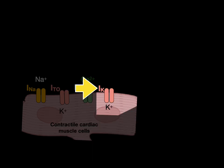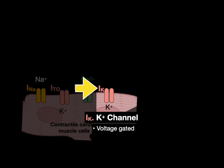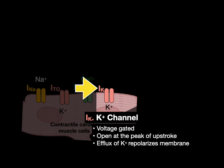Next, the potassium current through the potassium channel — these are voltage-gated. They open at the peak of the upstroke, allowing an efflux of potassium that repolarizes the membrane. These gates close when the membrane repolarizes.